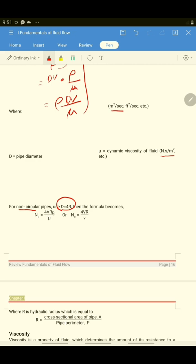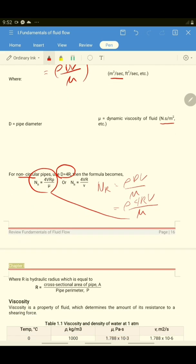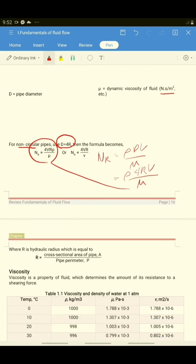Because you have rho dv, Nr is equal to rho dv over mu. And that is equal to rho 4R V, because d is equal to 4R. So you have mu, and this is now the derivation of this formula.